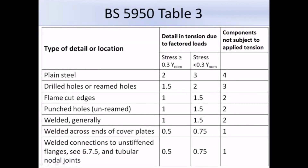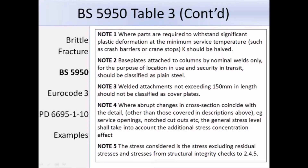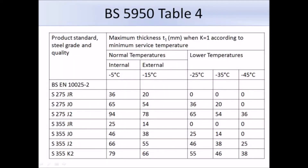This is Table 3 from BS 5950, and this is where we get the K factor from. In most cases we will be dealing with the welded generally case, and normally the tensile stress would be greater than 0.3 times the yield, so that usually gives us a K factor of 1. This is Table 4 from BS 5950. From the table you will see that the maximum thickness is dependent on the steel grade and subgrade used, and also the minimum surface temperature. The thicker the steel section required, the higher the subgrade of the steel that you will have to use. The values for internal and external temperatures are taken as minus 5 and minus 15 degrees Celsius. We need to select a thickness greater than the flange thickness of our section in the column of the service temperature we're dealing with, then read to the left to get the suitable steel grade.